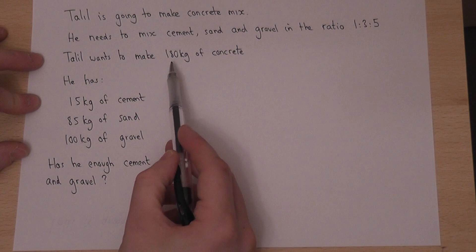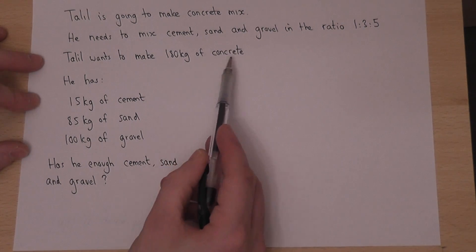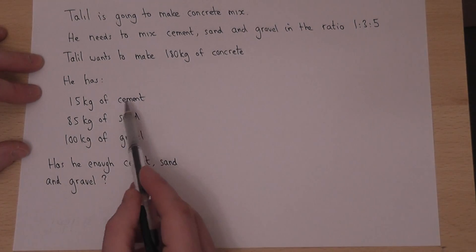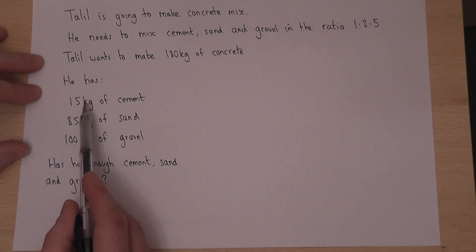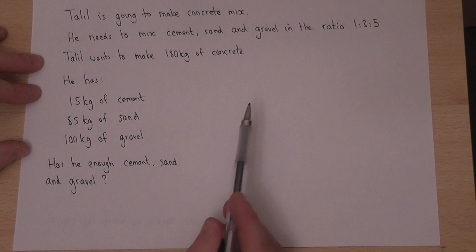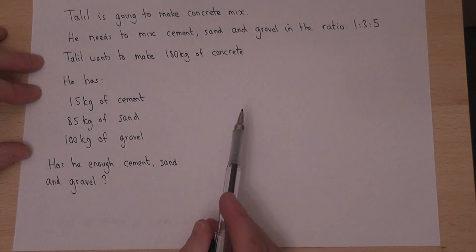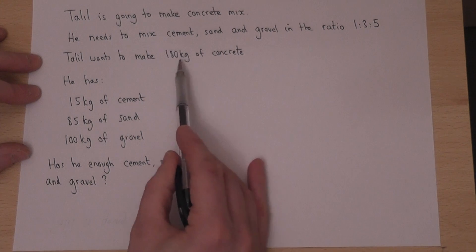He wants to make 180 kilograms of concrete. He has 15kg of cement, 85kg of sand, and 100kg of gravel with these weights of each ingredient. The question is, does he have enough cement, sand and gravel to make 180 kilograms of concrete?